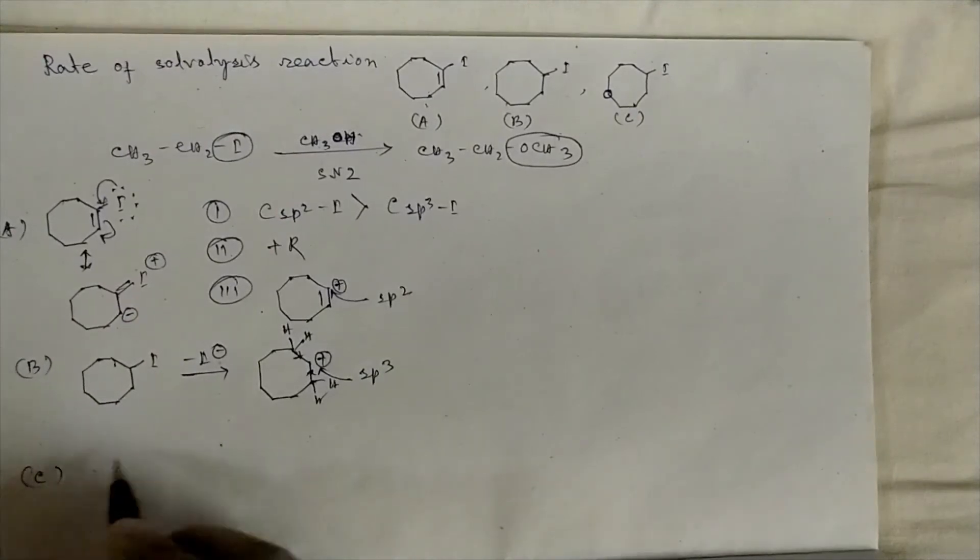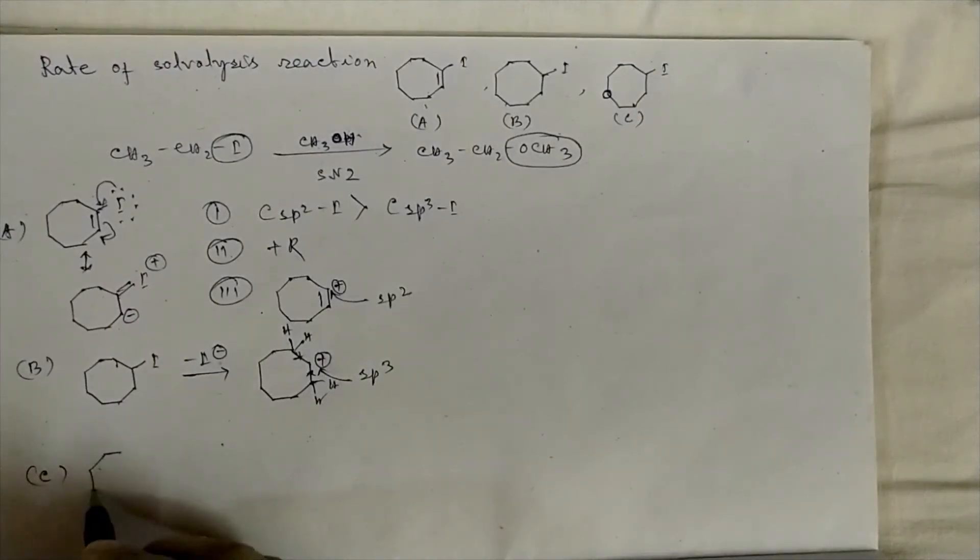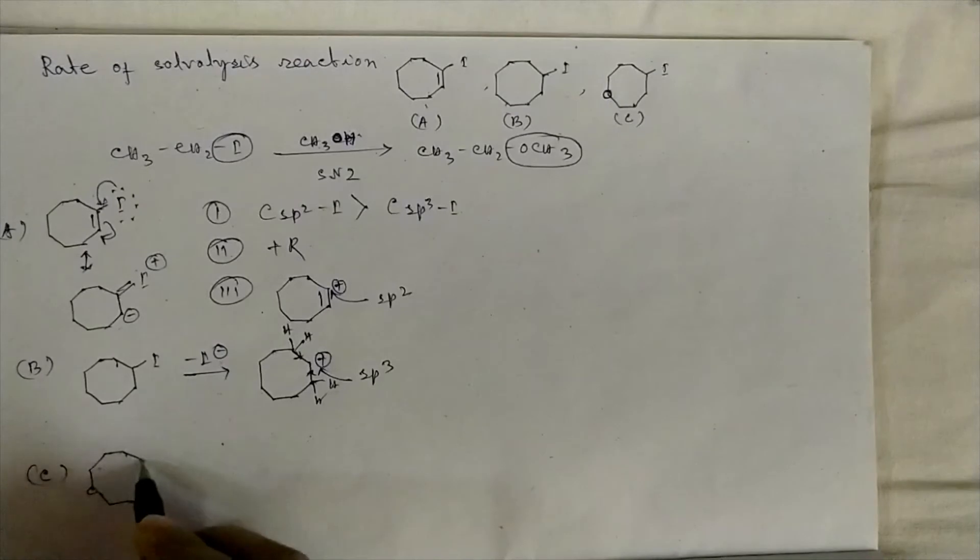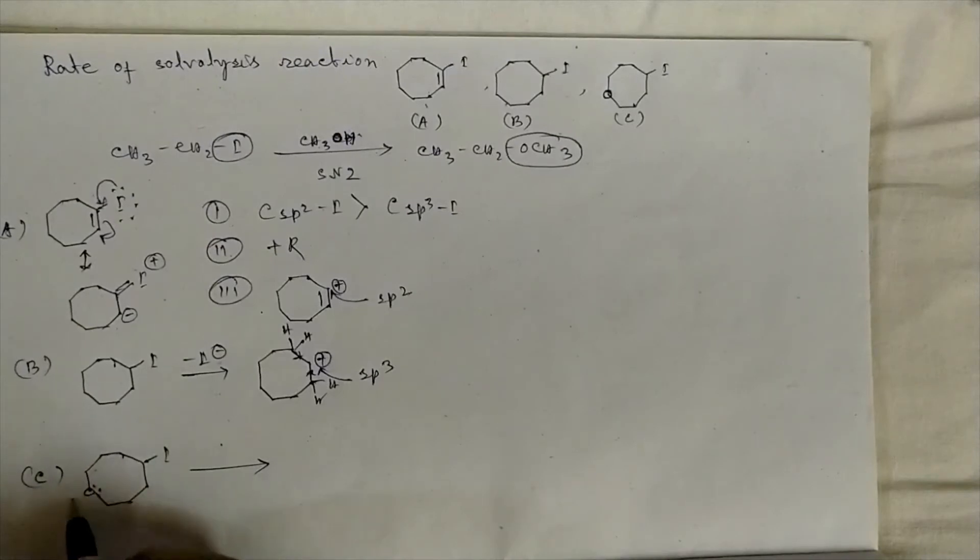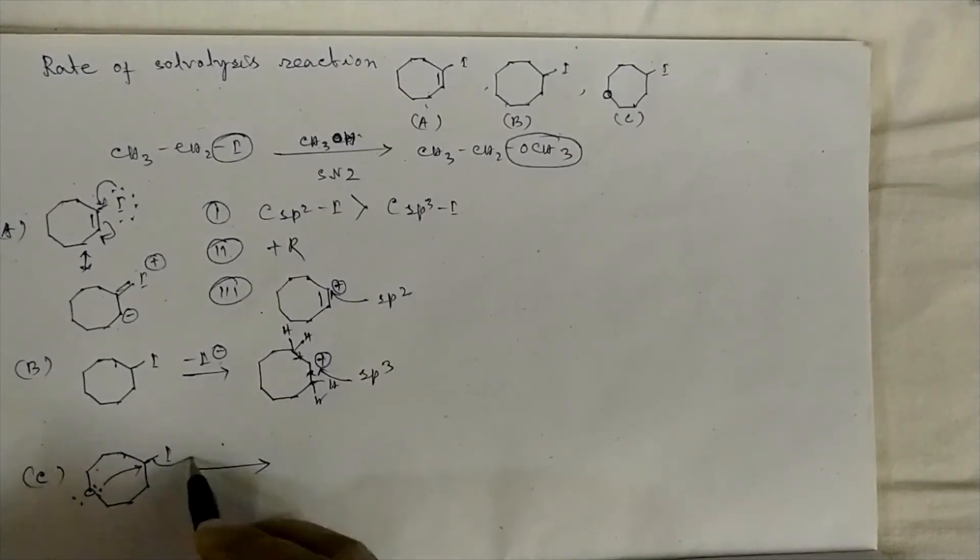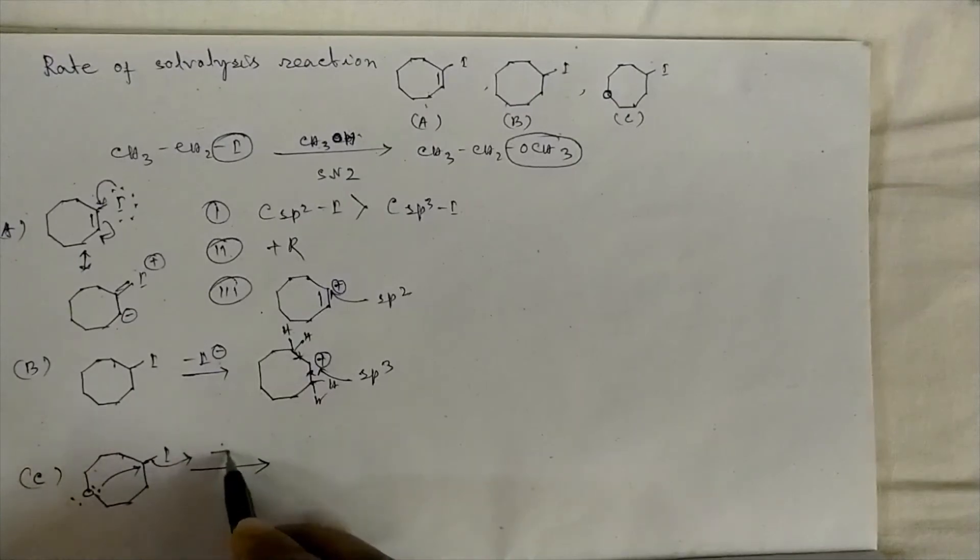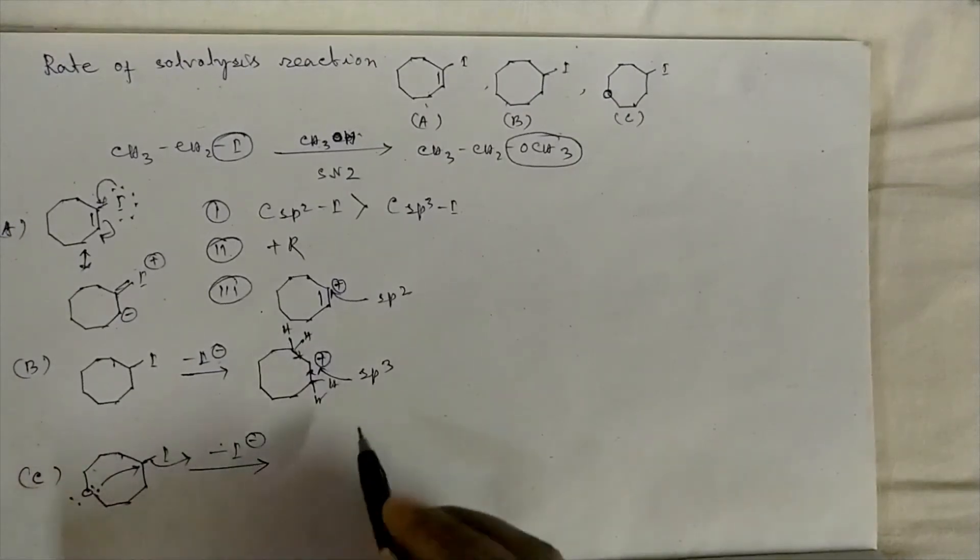In compound C, the oxygen atom has one lone pair of electrons behind this carbon atom, so this lone pair assists the departure of iodide as a leaving group.